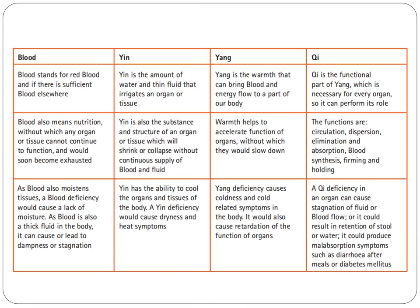Yang deficiency would also cause retardation of the function of the organs. Next, we have the qi, which is the functional part of the yang, necessary for every organ so it can perform its role. The functions are circulation, dispersion, elimination, absorption, blood synthesis, firming, and holding. A qi deficiency in an organ can cause stagnation of fluid or blood flow, or it could result in retention of stool or water. It would produce malabsorption symptoms such as diarrhea after meals or diabetes mellitus.